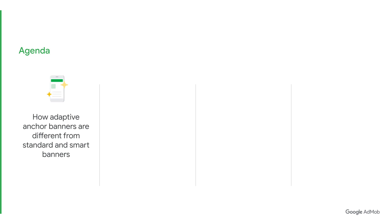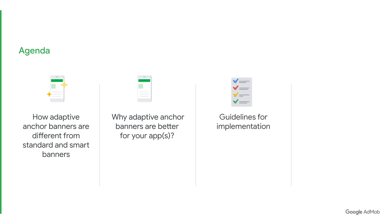Firstly, we will discuss what Adaptive Anchor Banners are and how they are different from standard and smart banners. Next, we'll talk about why Adaptive Anchor Banners may be a better choice for your app. Afterwards, we'll go over some guidelines for implementation. And finally, we'll answer some frequently asked questions that developers have asked us about Adaptive Anchor Banners.